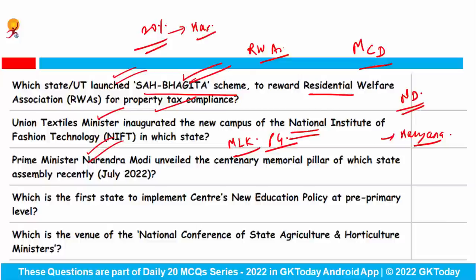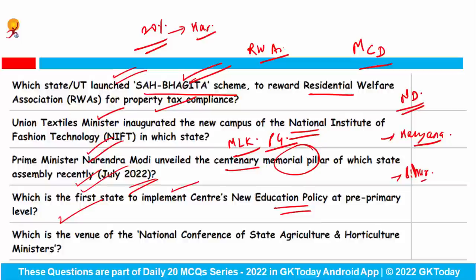Prime Minister Narendra Modi unveiled the centenary memorial pillar of Bihar Assembly recently in July 2022, to mark the conclusion of the one-year centennial celebrations of the state legislature building. The foundation stone for this pillar was laid by President Ramnath Govind on 21st October 2021. Which is the first state to implement the Centre's new education policy at pre-primary level? Uttarakhand became the first state to initiate this process, with Chief Minister Pushkar Singh Dhami inaugurating Bal Vatikas at Anganwadi Kendras across the state.